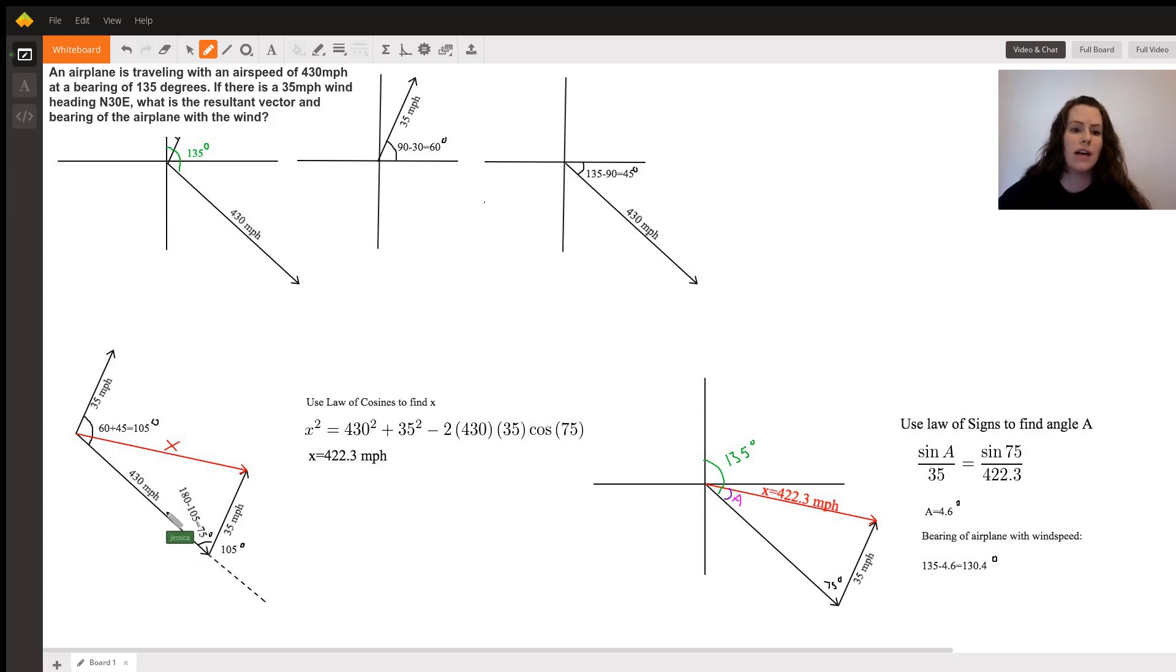Now as you notice, we have side angle side. We have the magnitude of the airplane, the angle between them, and then the magnitude of the wind speed. And using those, we can use the law of cosines in order to find our x side, which I've set up here. I've plugged it into the equation for the formula of law of cosines.